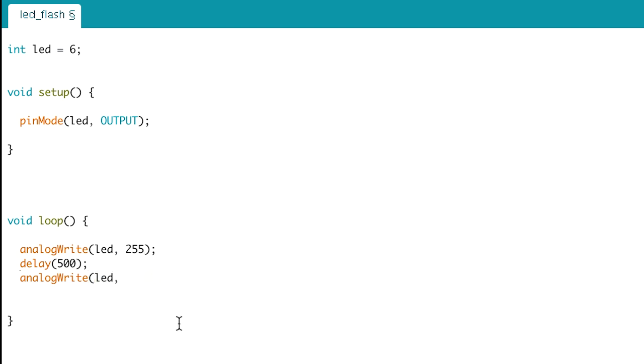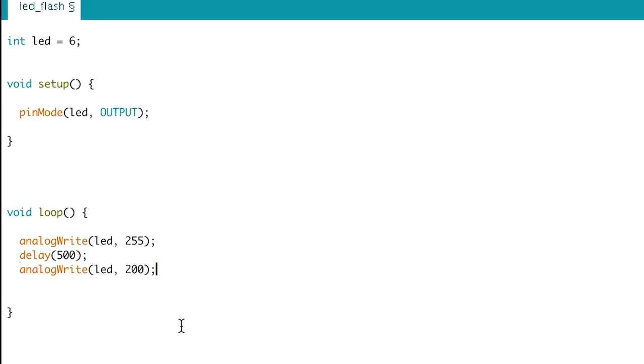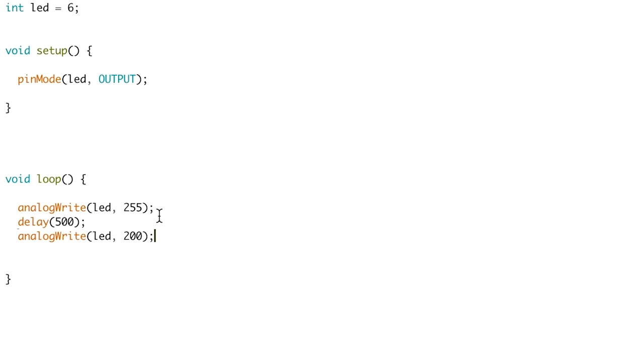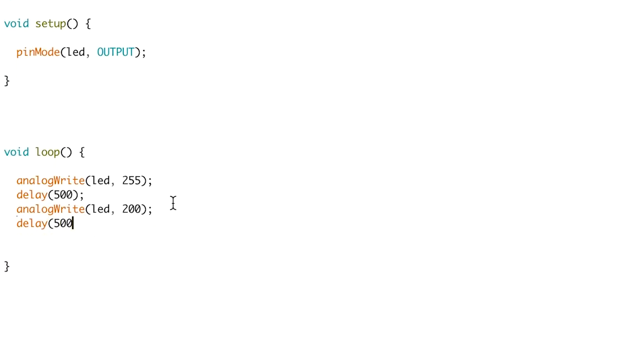Let's take away 50 from the write value. So, now let's do 200. Well, let's take away 55, actually. And then another delay. And then 500. And then analog write. LED. Take away another 100. No, take away another 50, sorry. And then another delay. Delay 500. Analog write, LED, 100. And so, you get the idea.